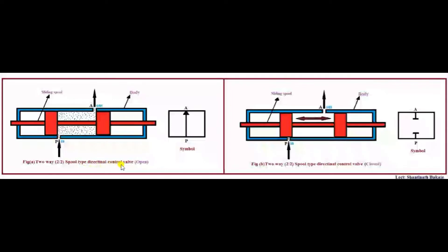Now let us discuss about the definition of a two-way, two by two spool type directional control valve. These types of valves are used to allow the flow of fluid into the valve or to block the way of fluid entering into the valve. This figure allows the flow of fluid and this figure shows it blocking the way at port P.